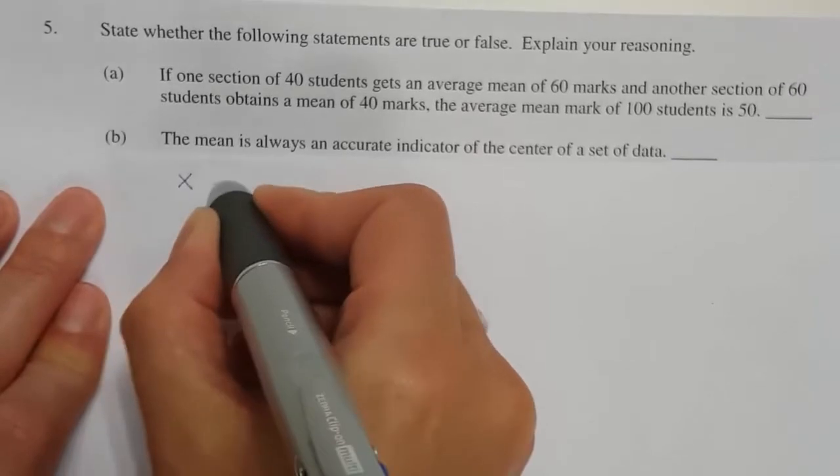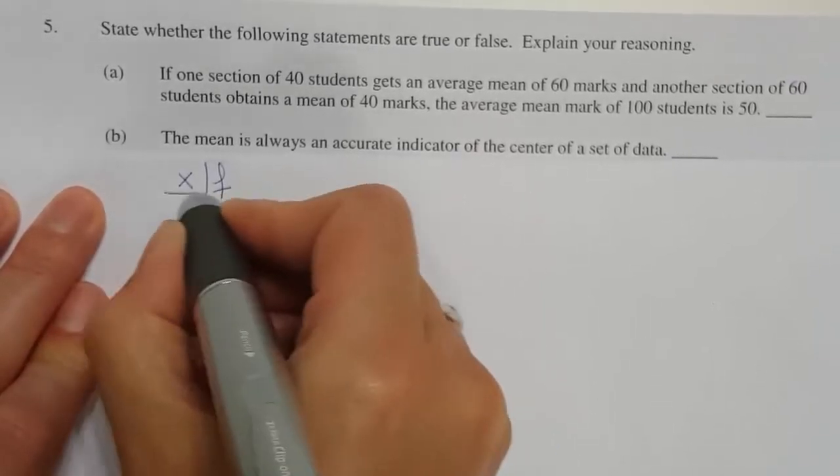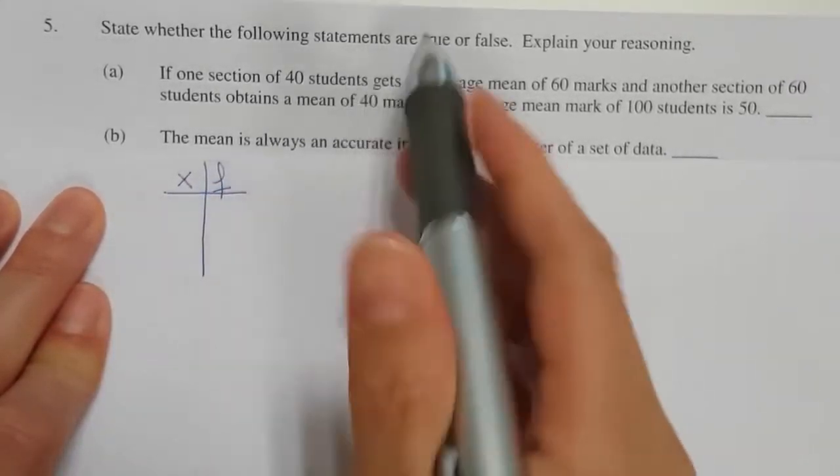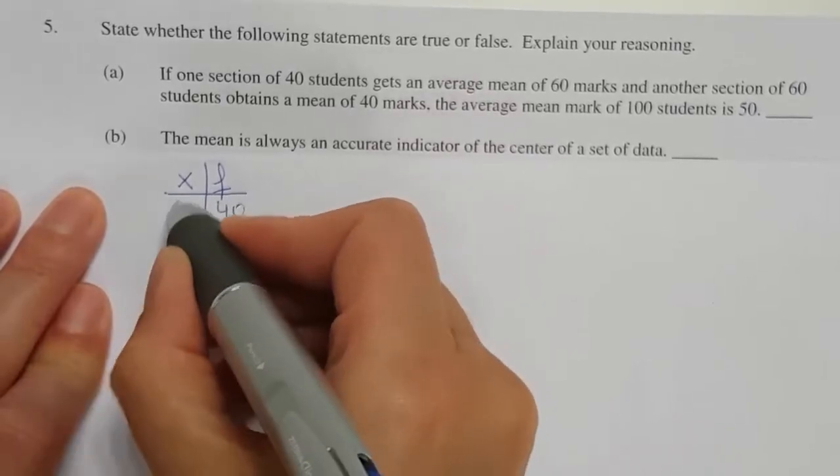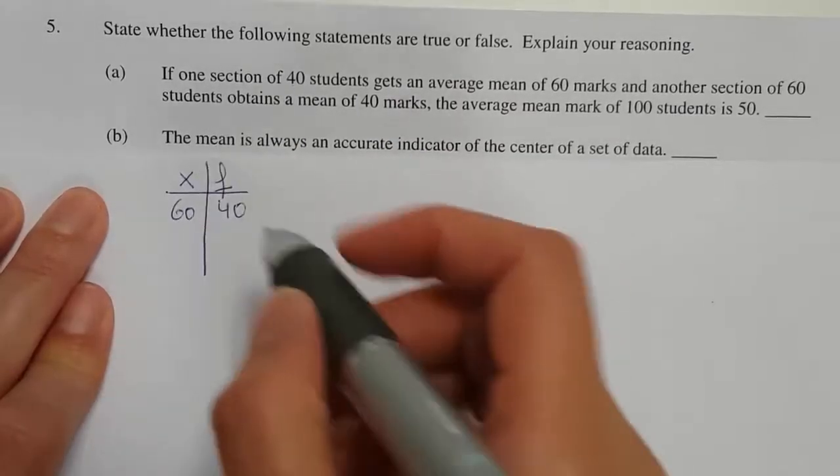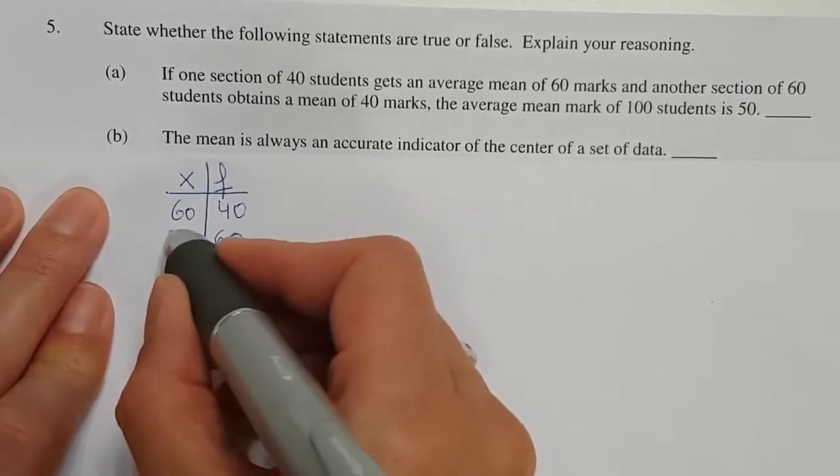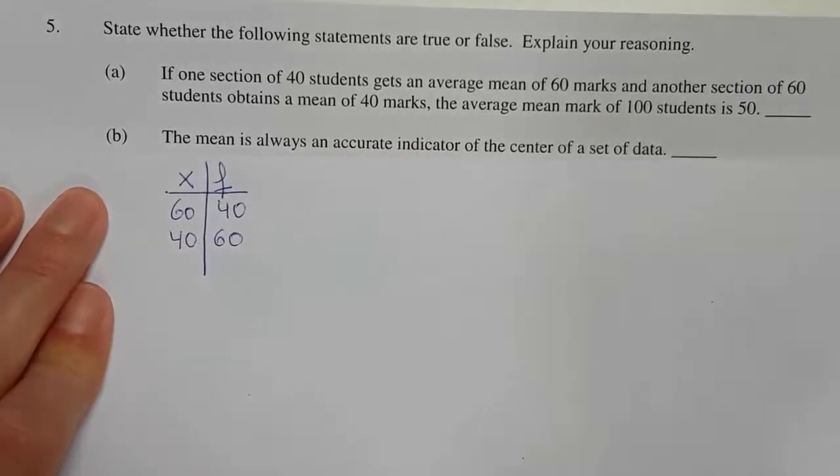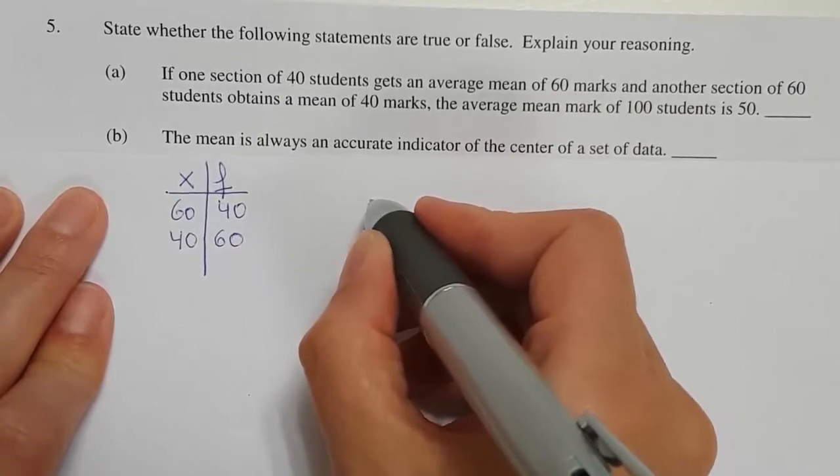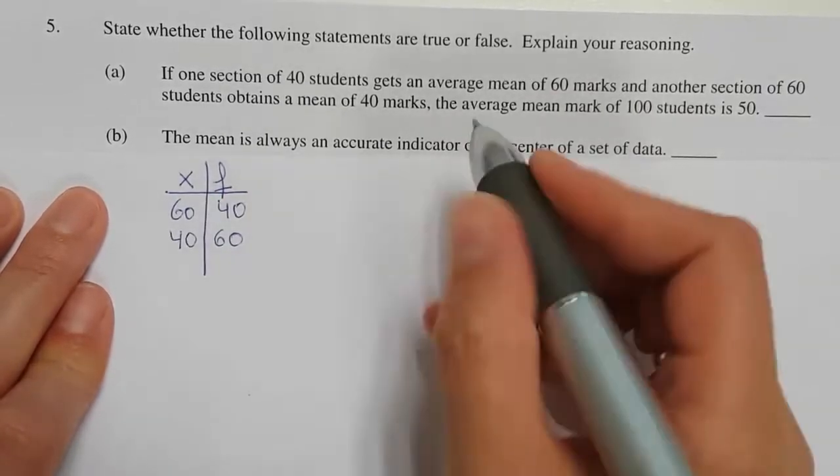You can either do it in a frequency table like this: the scores of 40 students is 60, and 60 students who have a score of 40. So now you can calculate the mean either in your calculator or like this.